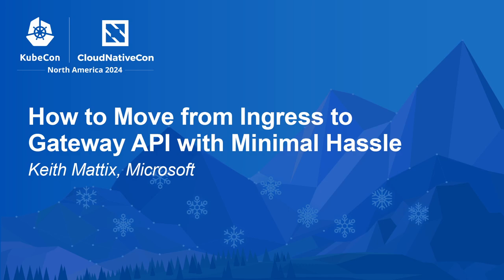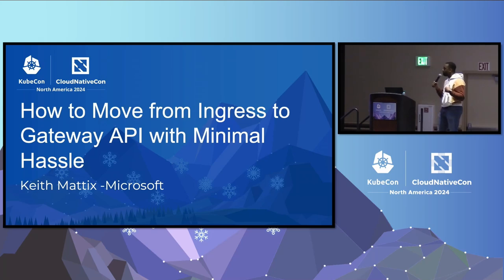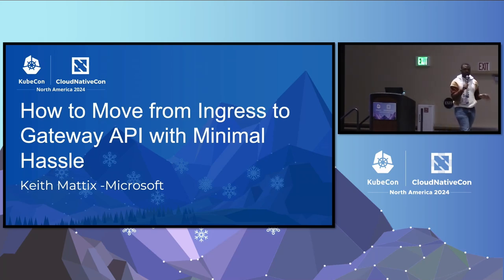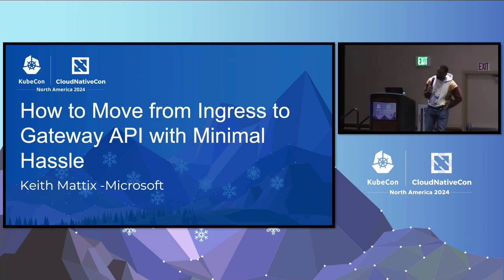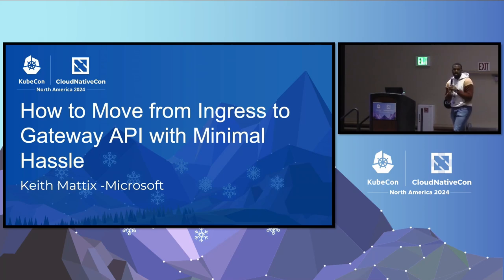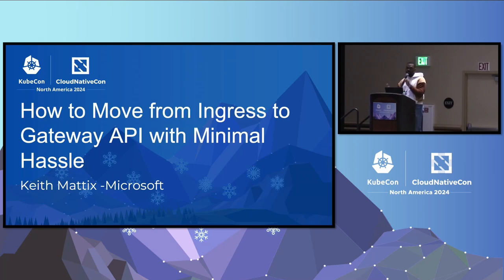My name is Keith Maddox. I'm a senior engineering lead at Microsoft. I work on lots of open source projects in the networking space, such as Istio, Envoy Proxy, and of course Gateway API. A couple of years ago, I was one of the original Gateway API mesh maintainers and still to this day contribute a good bit to the project to keep things moving forward.